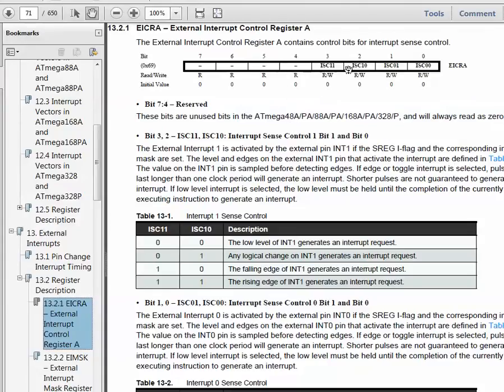Four of the bits are reserved, so those are always zero. And then here we have two bits for each of the two external interrupts. ISC11 and ISC10 control interrupt one, and ISC01 and ISC00 control the sense mode for interrupt zero.